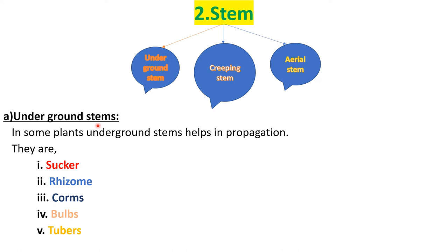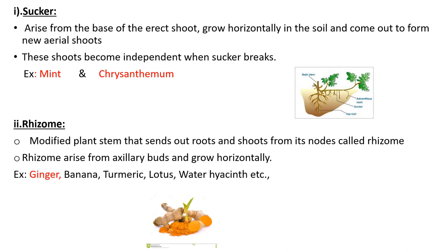The first one is underground stems — these are the stems grown inside the soil. In some plants, underground stems help in propagation, and they are called by different names like sucker, rhizome, corms, bulbs, and stolons.